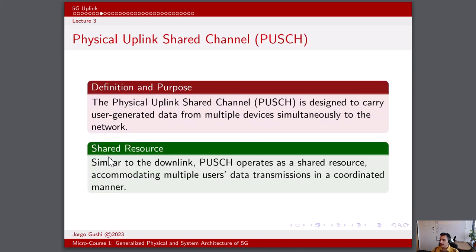The PUSCH is designed to carry user-generated data from multiple devices simultaneously to the network. Similar to the downlink, PUSCH operates as a shared resource accommodating multiple users' data transmissions in a coordinated manner. PUSCH carries actual user data such as files, videos, or messages from the user equipment to the base station. It employs adaptive modulation and coding schemes to adjust transmission parameters based on channel conditions, ensuring efficient spectrum usage and reliable communication. To enhance demodulation accuracy, PUSCH uses demodulation reference signals, or DMRS, to help the receiver decode the transmitted data accurately.